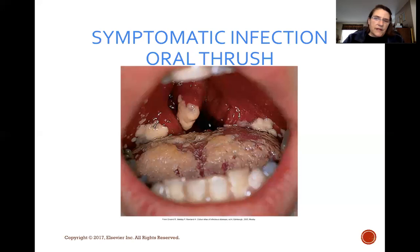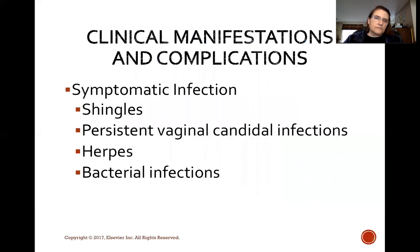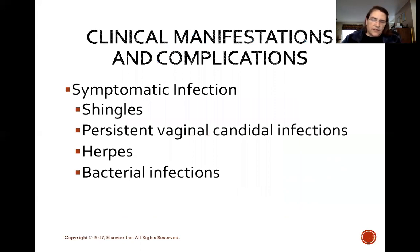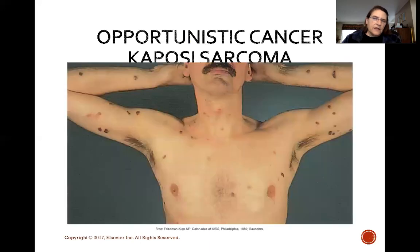Symptomatic infections — this is a picture of oral thrush, a candidal infection of the mouth. HIV patients are also prone to shingles, persistent vaginal candidal infections, herpes, and frequent bacterial infections. This is all because the immune system is suppressed and cannot fight back.